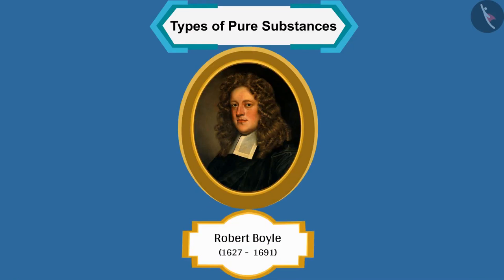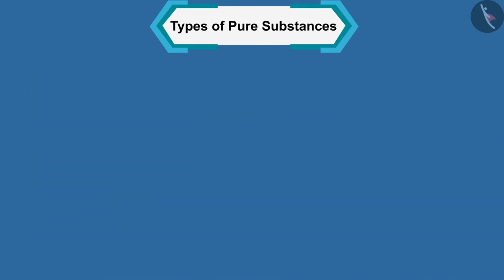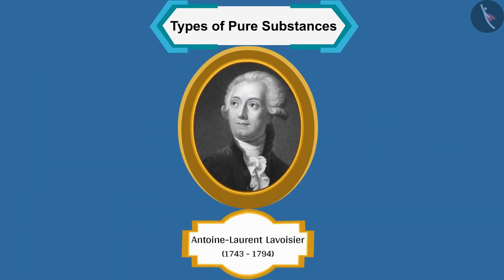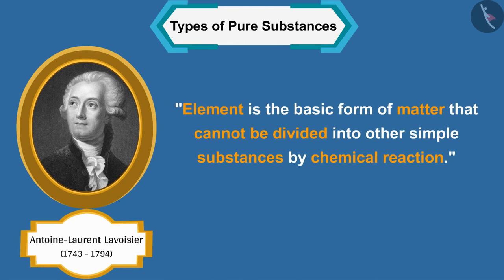Do you know Robert Boyle was the first scientist in the world who first used the word 'element' in the year 1661? Antoine Laurent Lavoisier, 1743 to 1794, a French chemist, was the first to establish an experimentally useful definition of an element.